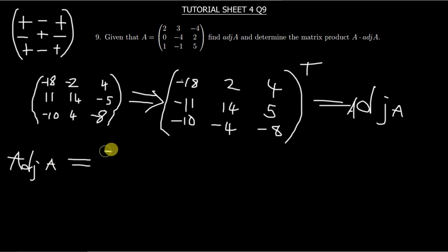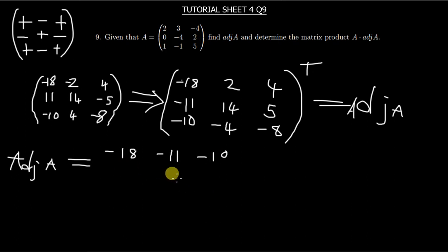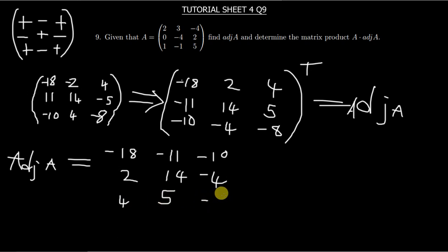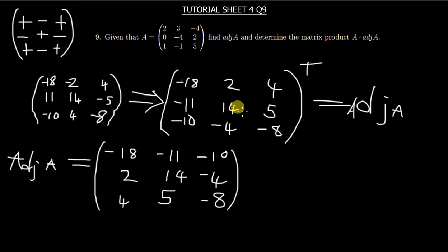When transposing, the first entry remains the same and all rows become columns. You get negative 18, then negative 11, negative 10 in the first row; then 2, 14, negative 4 in the second; then 4, 5, negative 8 in the third. Make sure the leading diagonal — negative 18, 14, and negative 8 — has the same numbers as before. This is the adjoint of A.